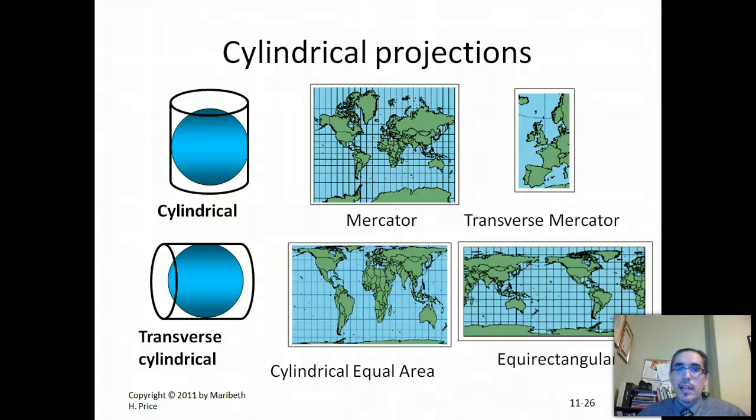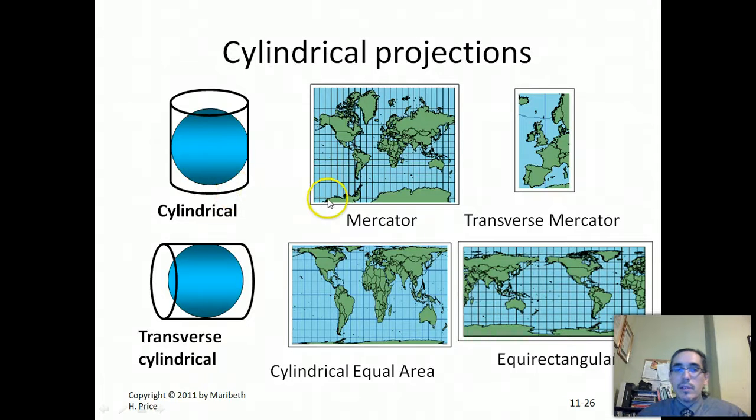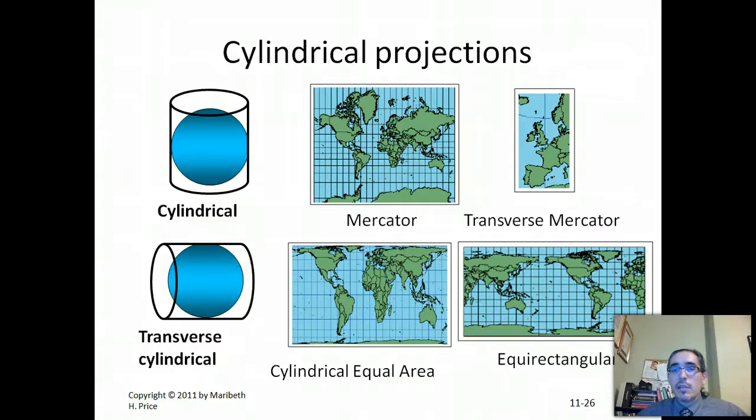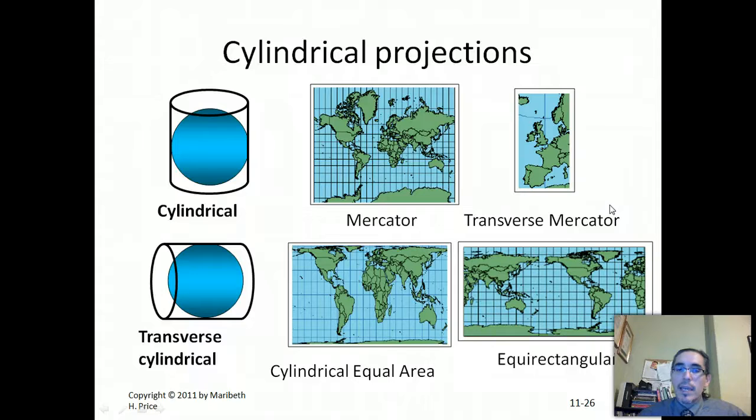So cylindrical projections, there's a lot of different kinds of them. And they can be constructed in a variety of ways, where the cylinder is oriented this way, where it's tangent with the equator, or a transverse orientation, so that the cylinder is tangent with a meridian or a line of longitude. The significance is in terms of what you're trying to achieve, where you're trying to minimize the distortion and trying to focus the attention. There's all kinds of projections that are created this way. And when you encounter them, sometimes they'll actually have the name of the projection type in the name. So like the cylindrical equal area down here, obviously the cylindrical part refers to the way it was constructed.